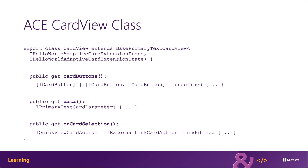The card view for an ACE is implemented in the cardview.ts file, generally stored in the card view subfolder within the adaptive card extension component. The initial card view file created by the Yeoman Generator contains three methods. The cardButtons method returns zero, one, or two objects of type ICardButton, defining the buttons rendered on the card view. Different card view templates restrict how many buttons can be displayed — for instance, the primary card template can only show two buttons when its size is set to large. The data method returns an object bound to the card view's template using adaptive card templating functionality.